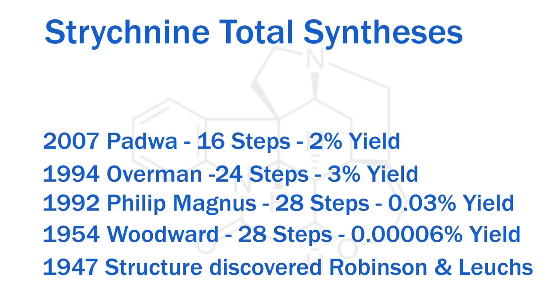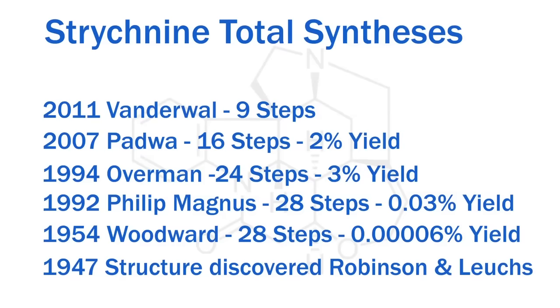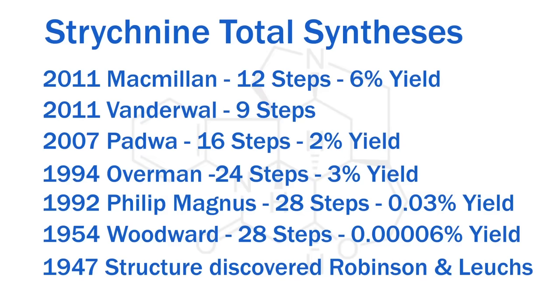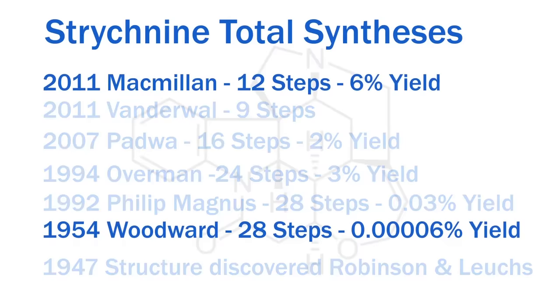By 2011, we had the shortest synthesis ever. Nine steps by Chris van der Waal. Terrible yield. There was one really difficult step in there. But nine steps, when you think the original was 28, it was quite incredible. And probably the best synthesis out there is by David MacMillan. Twelve steps, but 6% yield. Considerably stronger. Ten thousand times more efficient than the original synthesis. And this is the progress that organic chemistry has made.